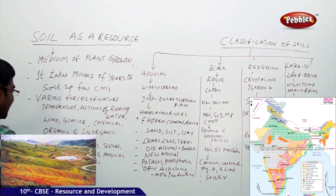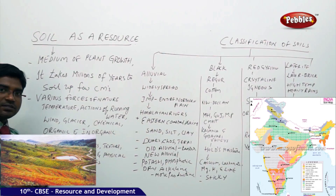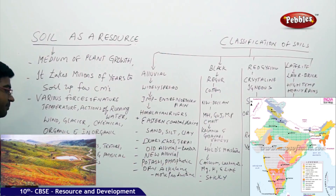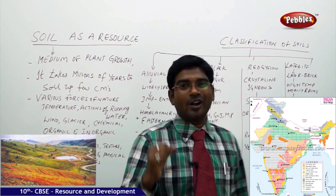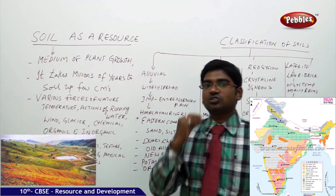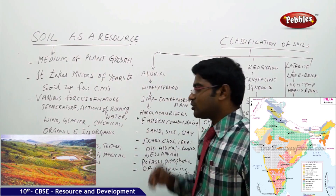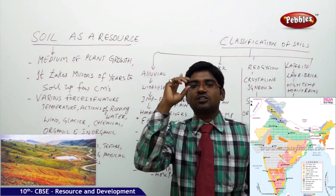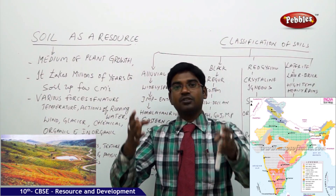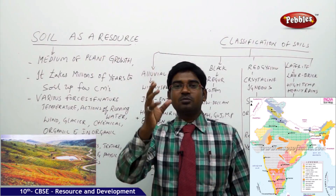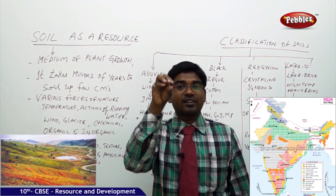Moving on to color — basing on the color, thickness, texture, age of the soil, and its chemical and physical properties, how do we categorize the soil? What are the criteria to categorize the soil? The first criterion is how the soil looks — looking at the color of the soil.